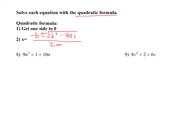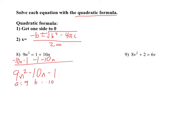Let's go ahead and use it. We'll do number 8. Like I said, we're going to move everything to one side. I'm going to subtract the 10n and the 1 over to this side. I want to put it in order: squared term first, then the regular variable, then the number. So this equals zero — just to emphasize we have one side equal to zero.